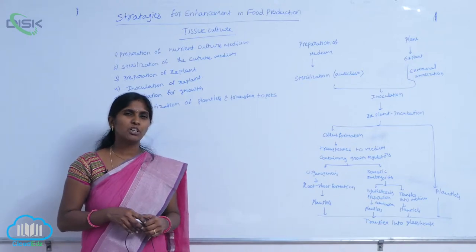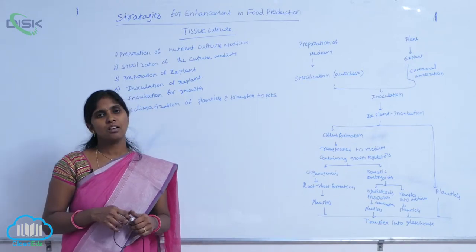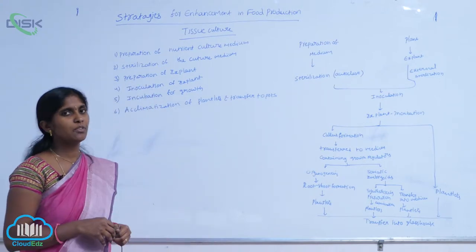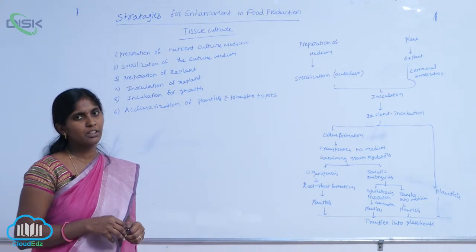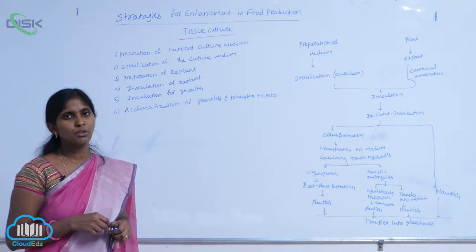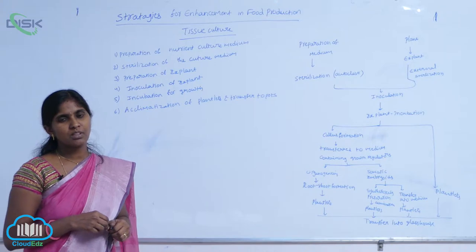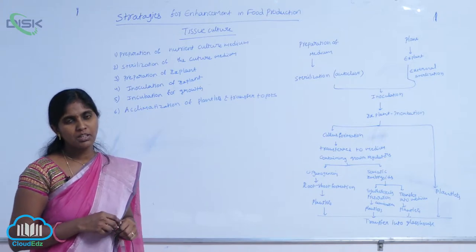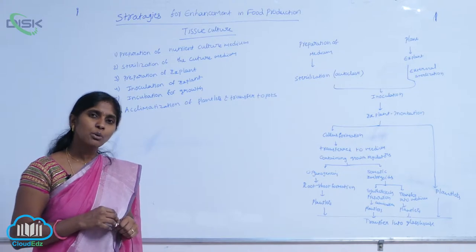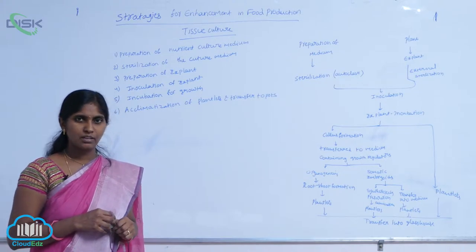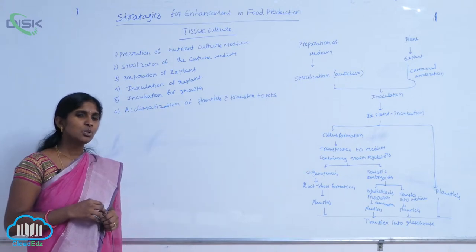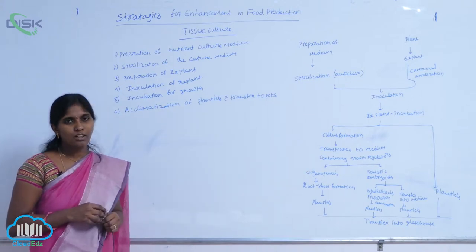Tissue culture is the in vitro cultivation of cells, tissues, or organs. It is one of the plant breeding techniques. It depends on the principle of cellular totipotency, which means the capacity of a somatic cell to regenerate a complete plant. Based on that character, tissue culture has been developed.